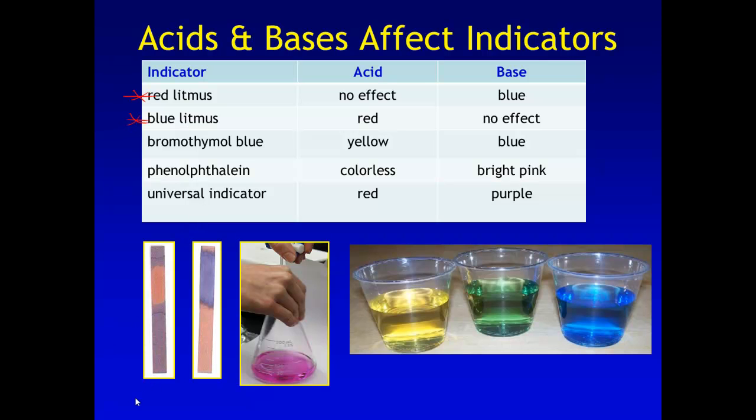So this one right here is blue litmus paper. If I put an acid on blue litmus paper, it turns red. I really think it looks pink, but everybody says it's red. This is my red litmus paper. If I put acid on my red litmus paper, there's no effect. It just looks like wet litmus paper. If I put a base on there, it turns blue. And so that helps me understand that it is a base.